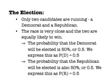Let's say this is a close election and the two candidates are equally likely to get elected, and these are the only candidates running. The probability of the Democrat getting elected is 0.5, and the probability of the Republican getting elected is also 0.5. We'll call these P(D) and P(R).